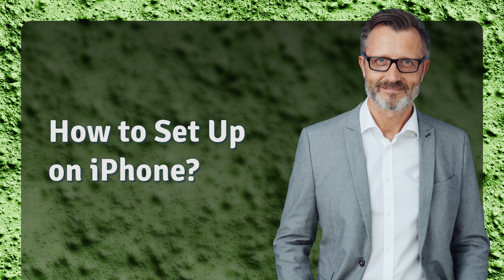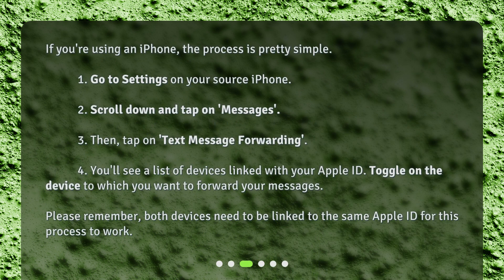How to set up on iPhone? If you're using an iPhone, the process is pretty simple. 1. Go to Settings on your source iPhone. 2. Scroll down and tap on Messages. 3. Then tap on Text Message Forwarding. 4. You'll see a list of devices linked with your Apple ID. Toggle on the device to which you want to forward your messages. Please remember, both devices need to be linked to the same Apple ID for this process to work.